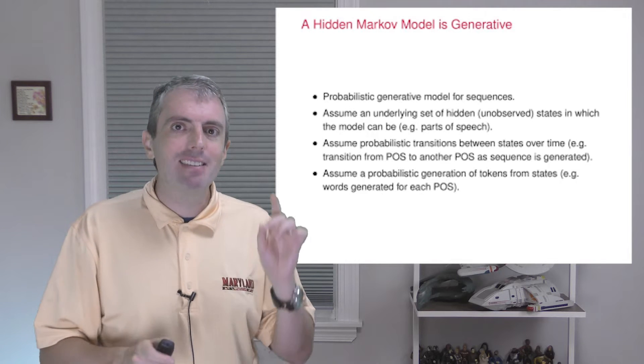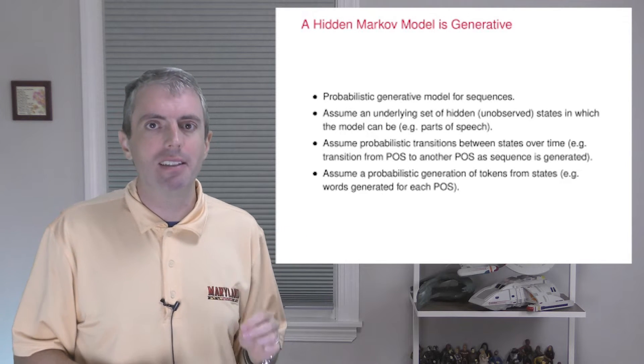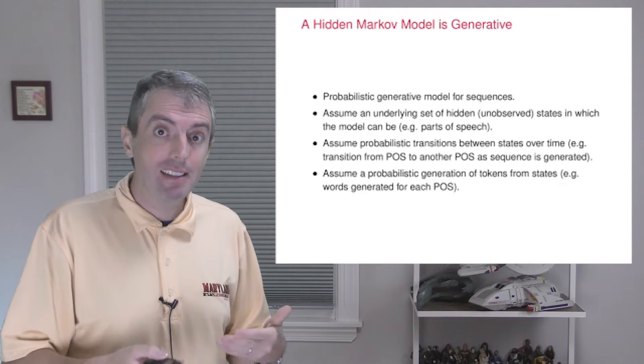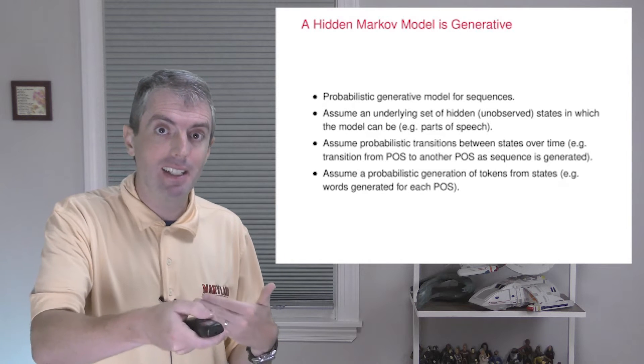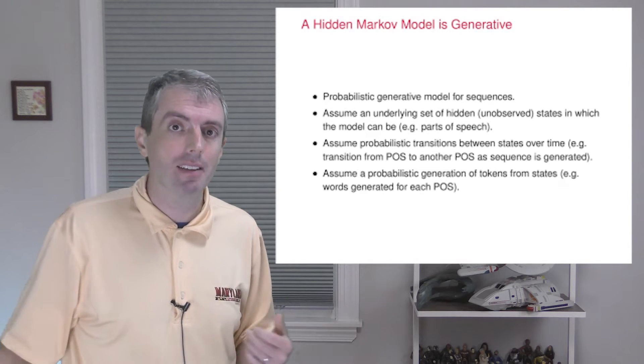If you have hidden states, you have probabilities for moving between the hidden states. Once you are in a state, you emit a word from that state. And this just keeps going until you've generated your text.